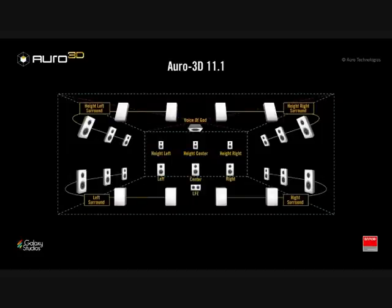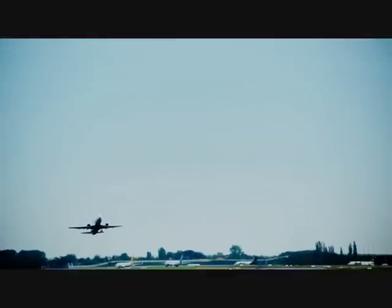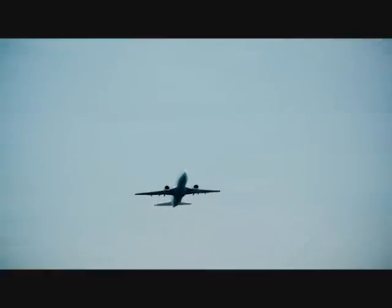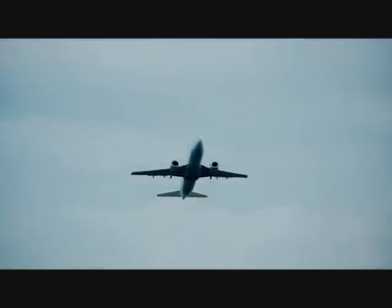Here are some examples of Aural 3D in action. By making use of the height channels, Aural 3D delivers surprisingly real audio effects, and also features an important third layer — the Voice of God channel — which allows reproduction of sounds coming from directly above the listener. Experience how capable the Aural 3D system is at reproducing the exact position of an airplane as it passes by, from taking off to flying directly overhead, and finally disappearing above and behind you.